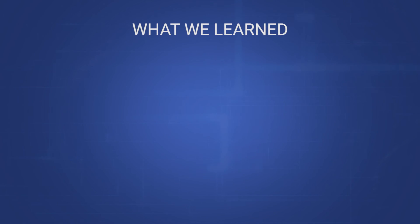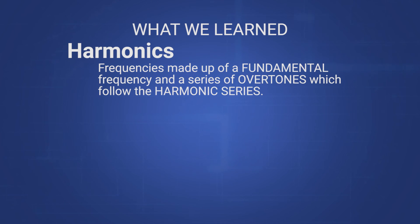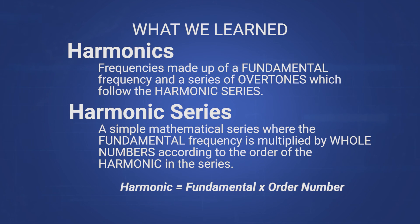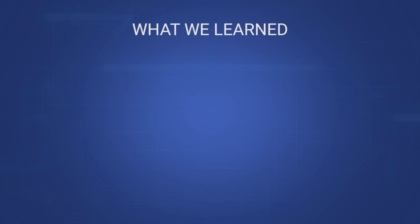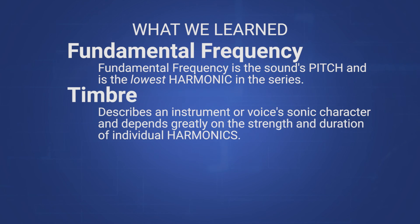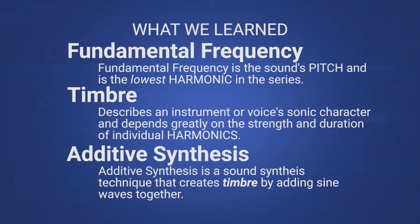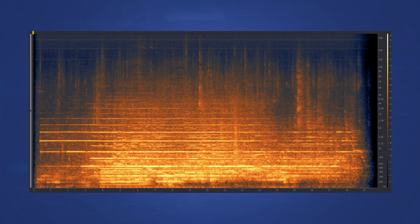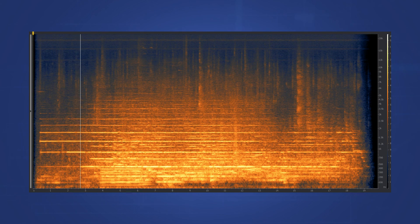To recap: in this video we learned that an instrument's harmonics are made up of a fundamental frequency and a series of overtones, which follow the harmonic series. We learned that the harmonic series is a simple mathematical series where the fundamental frequency is multiplied by whole numbers according to the order of the harmonic in the series. We saw that a sound's pitch is equal to its fundamental frequency, and that an instrument's timbre describes its sonic character, depending greatly on the strength and duration of individual harmonics. Finally, we learned that we can combine pure tones along the harmonic series to create new and interesting sounds and waveforms. Thanks for watching, and the next time you hear a sound or instrument, think about how its harmonics make it stand out or sound different from other instruments or sounds.